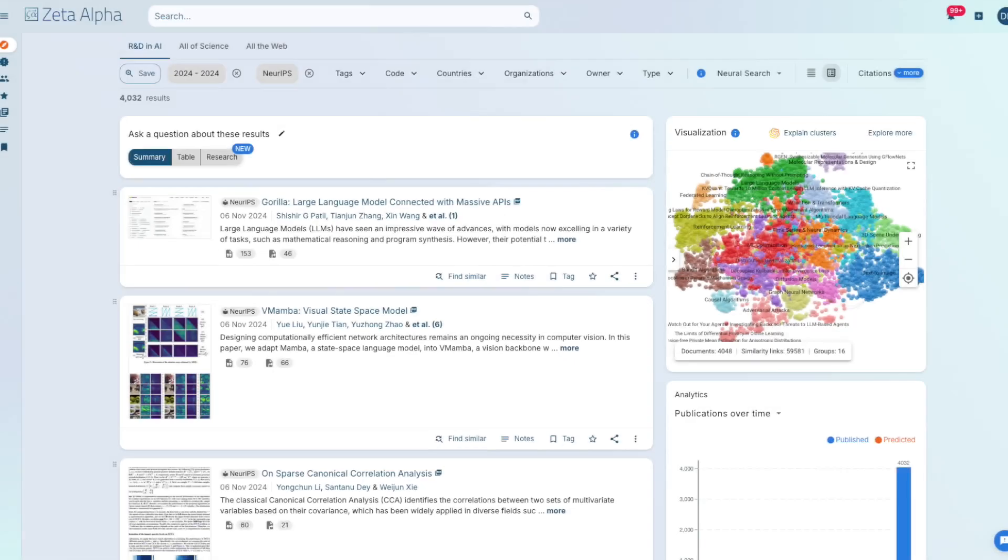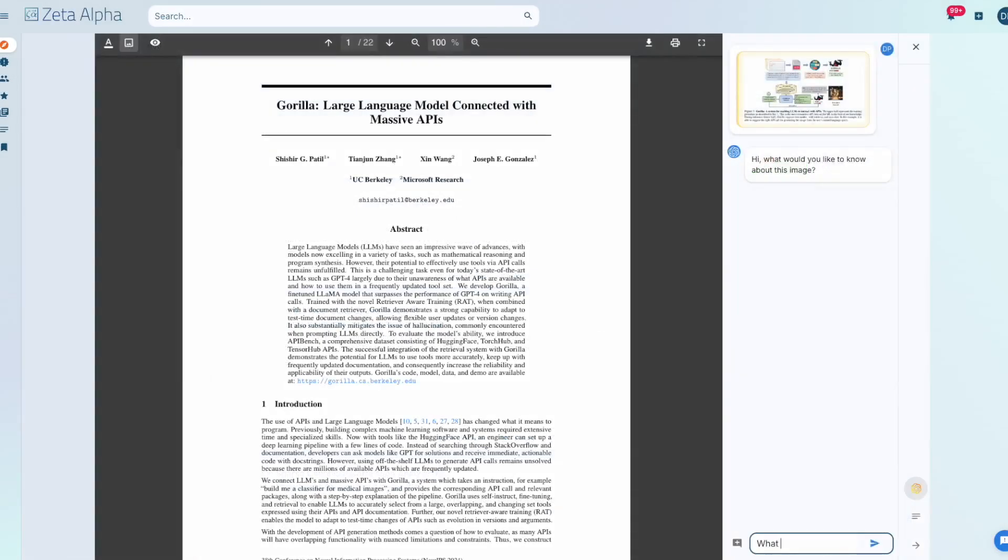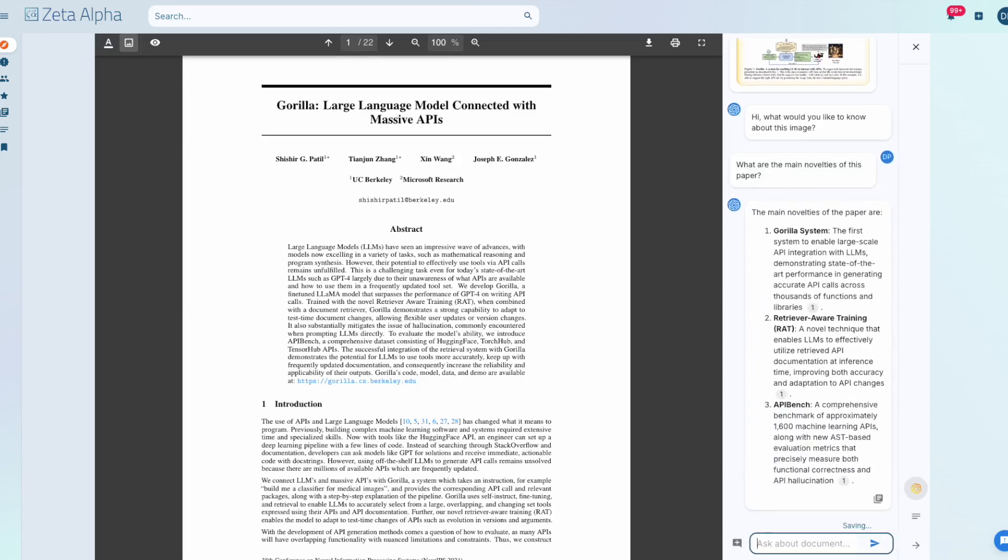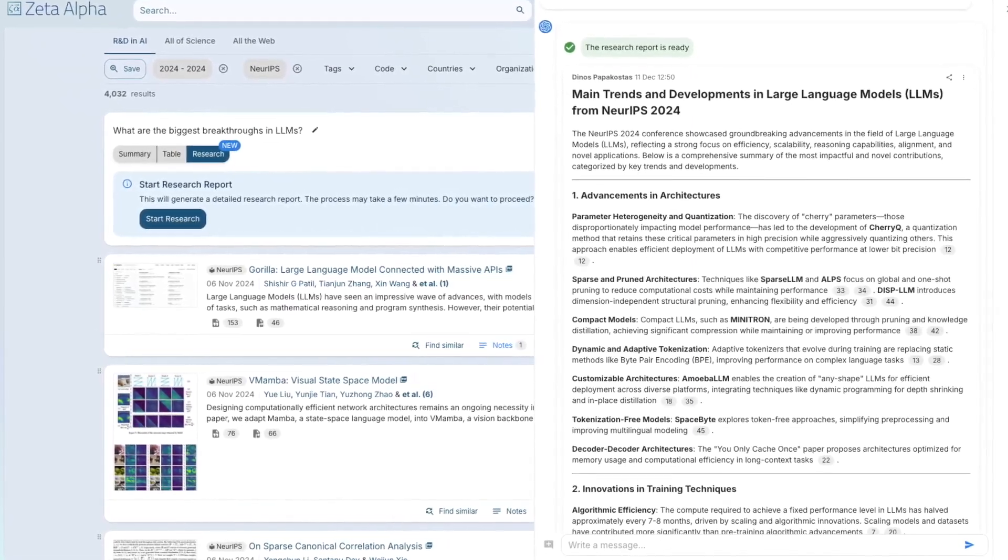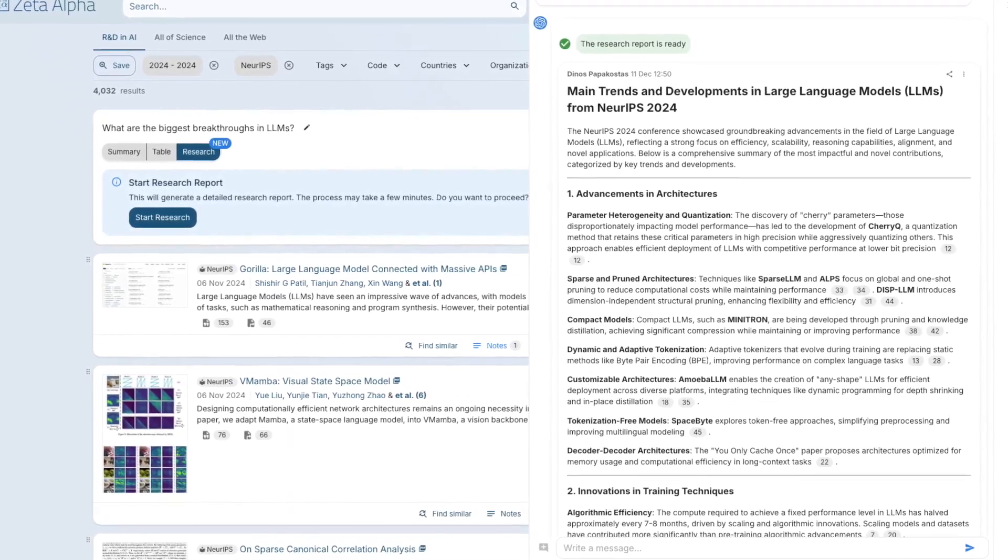If you want to explore all 4,000 papers from NeurIPS, sign up for Zeta Alpha and benefit from state-of-the-art neural search, RAG, and semantic visualizations. You can use our integrated multimodal chat capabilities to learn from any document, and with our research assistant, you can analyze entire collections and generate comprehensive research reports on the topics of your interest.